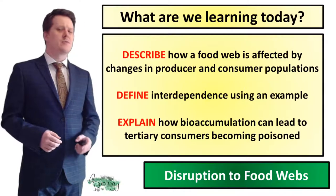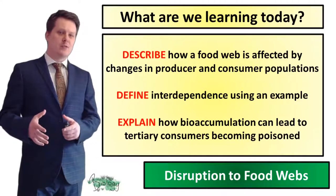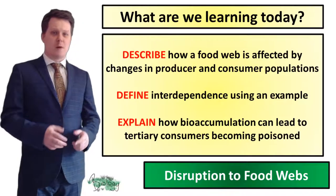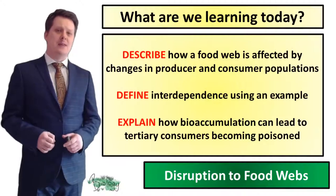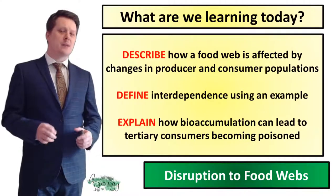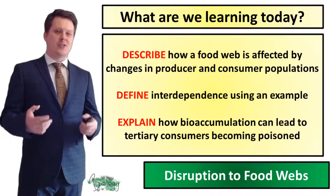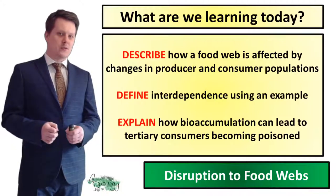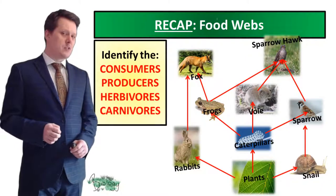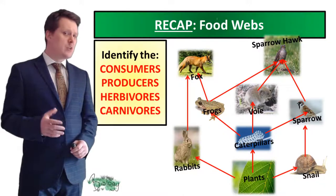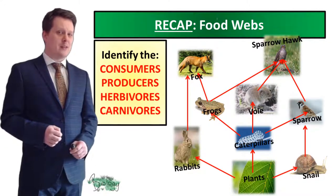We are going to be describing how our food webs are affected by changes in producer and consumer populations. We're going to define interdependence using an example. And we're going to explain how bioaccumulation can lead to tertiary consumers becoming poisoned. We're going to begin with a recap of some of the terminology we learned last lesson and that we're going to be using frequently in this lesson.